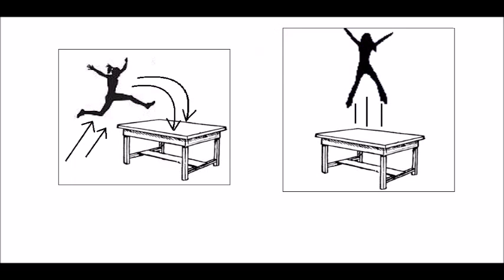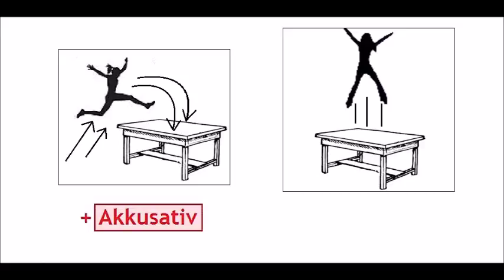Now, there is one more important category of German prepositions — it has to do with location. In English, the answer would be the same for both pictures: she's jumping on the table. But in German, we distinguish between a movement to another place and an activity at a place. Simply put, if the place changes, use accusative; if not, use dative.